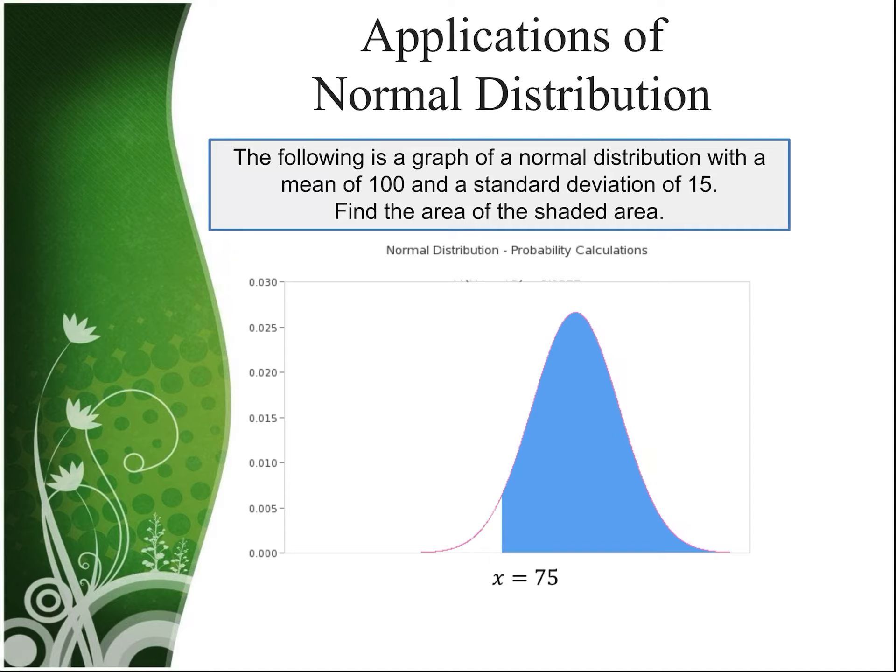The following is a graph of a normal distribution table, again, with a mean of 100 and a standard deviation of 15. Let's find the area shaded here, the area to the right of 75. So we'll use our same formula, 75 minus 100 over 15. And we have a z-score here of negative 1.67.